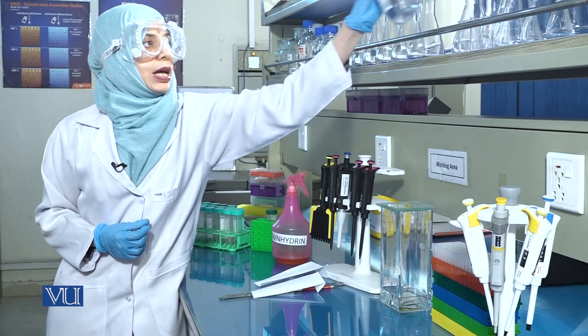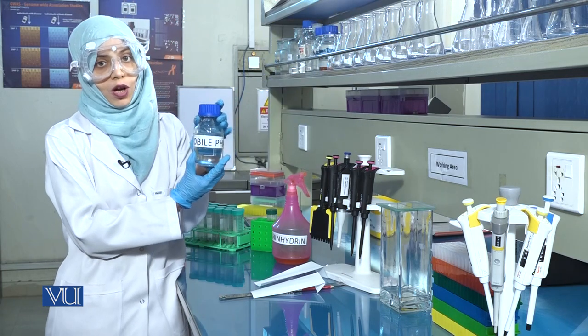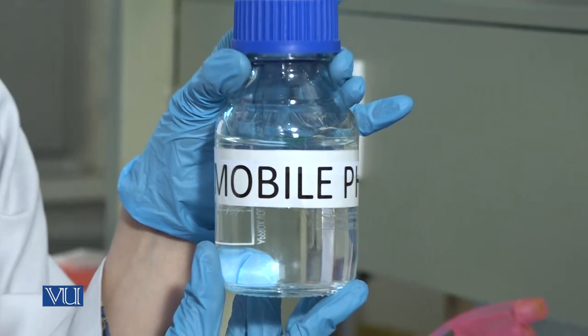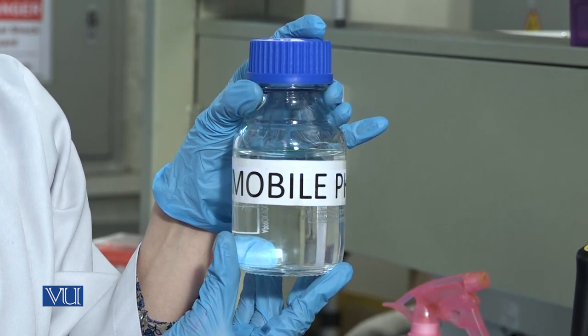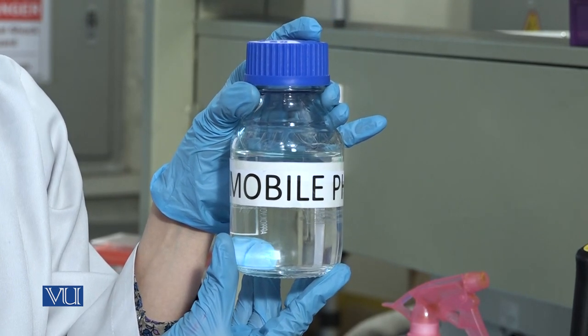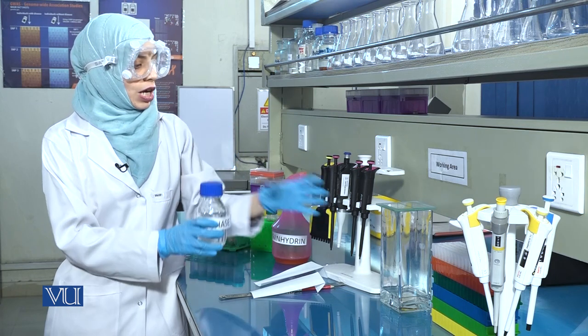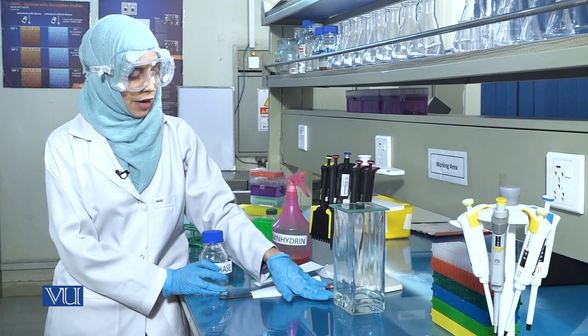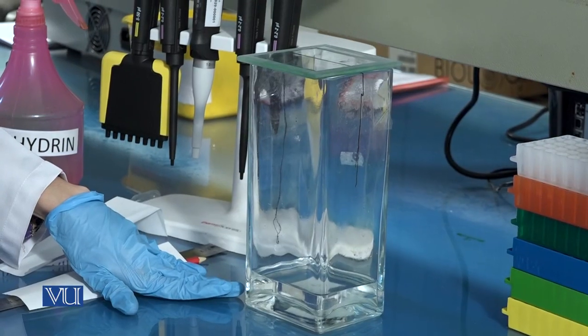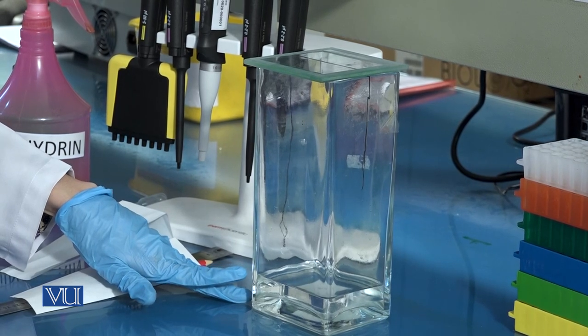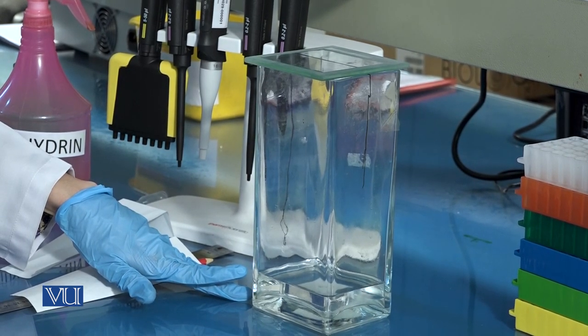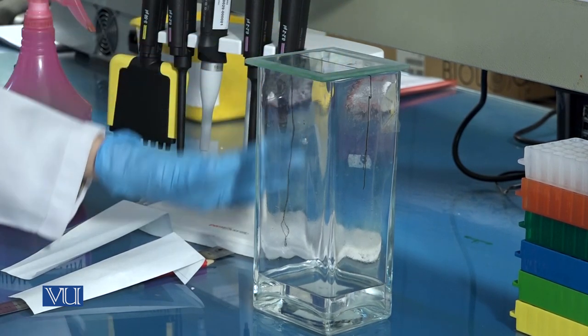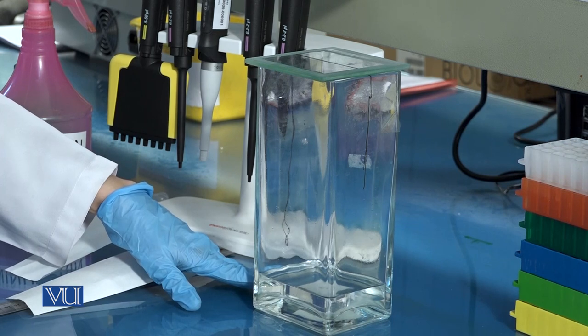To begin with, we will take the mobile phase or the organic solvent, which contains butanol, acetic acid, and water in the ratio 60, 15, and 25. Take a chromatography tank and add the solvent to it, ensuring that it covers the base of the tank, forming a layer half to one inch in thickness. Cover the tank and allow the atmosphere to get saturated with vapors of the organic solvent or mobile phase.